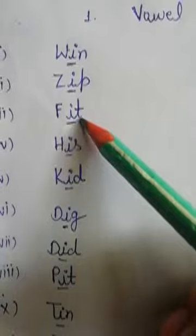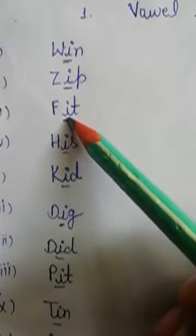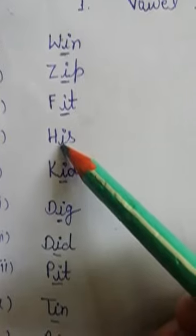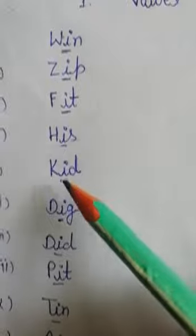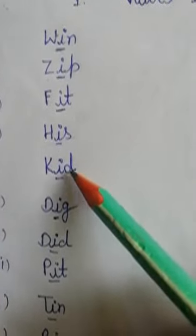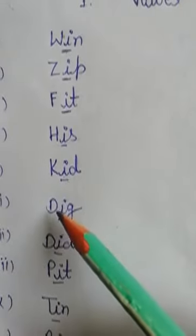F, I, T - Fit, I vowel दिया है. H, I, S - His. इस वर्ड में भी हमें I vowel दिया है. K, I, D - Kid, इसमें भी I vowel दिया है.